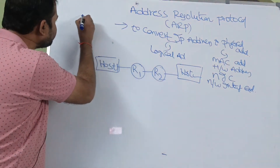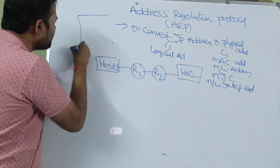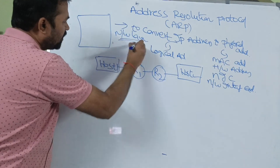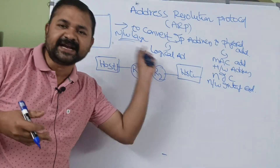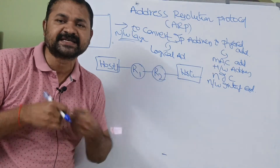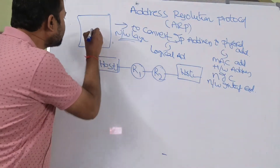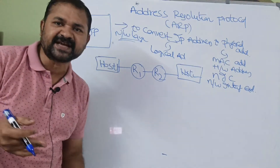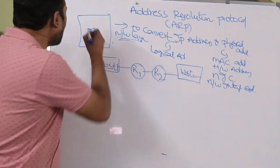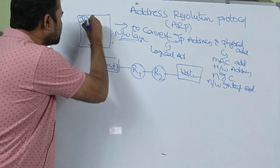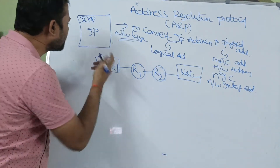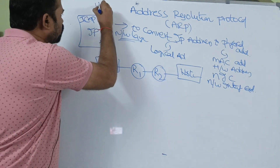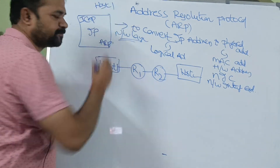Generally, a message travels through the network layer. In TCP/IP, the network layer can also be called the internet layer. The heart of the network layer is IP, which stands for Internet Protocol. On top of IP, we have ICMP, and below IP we have ARP. So let the source host be host 1.